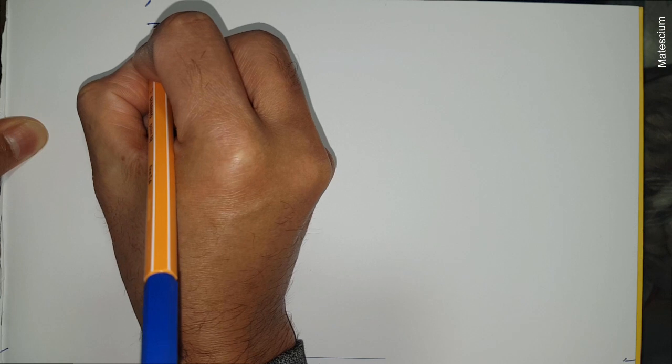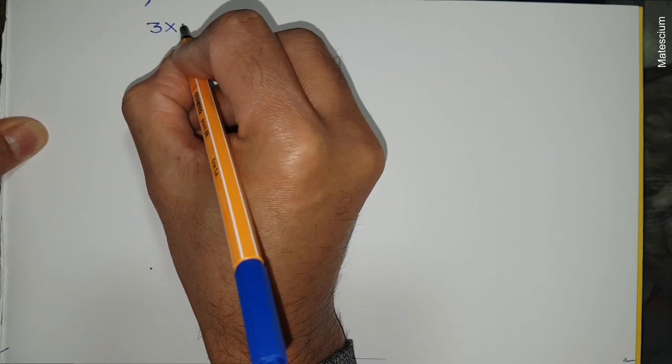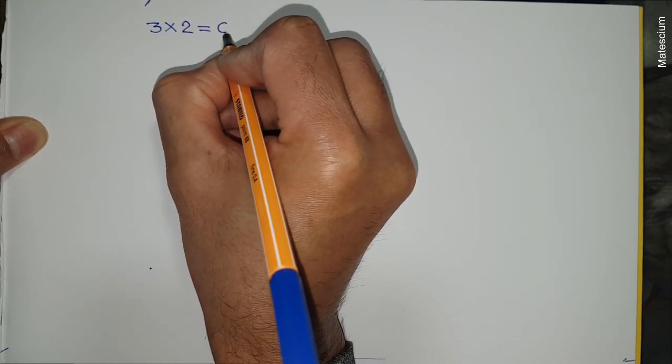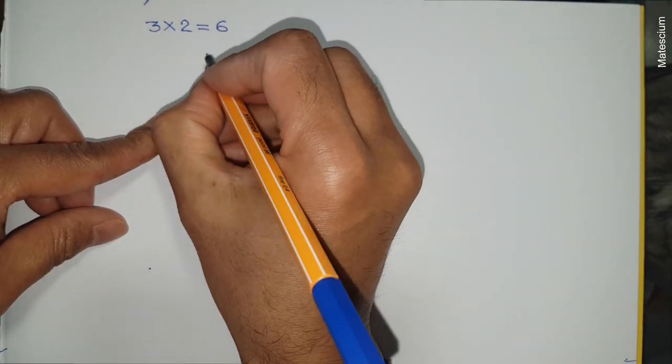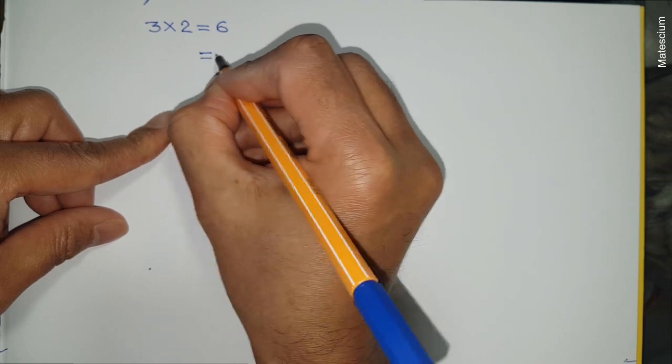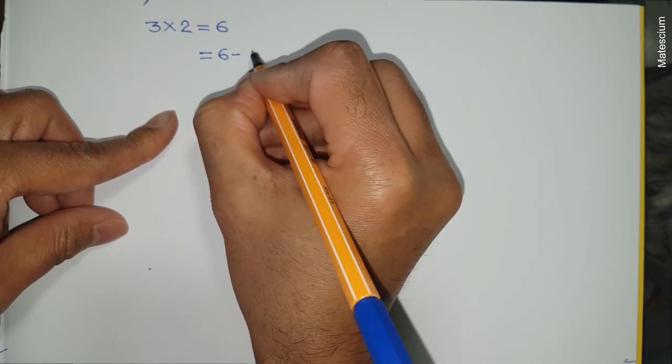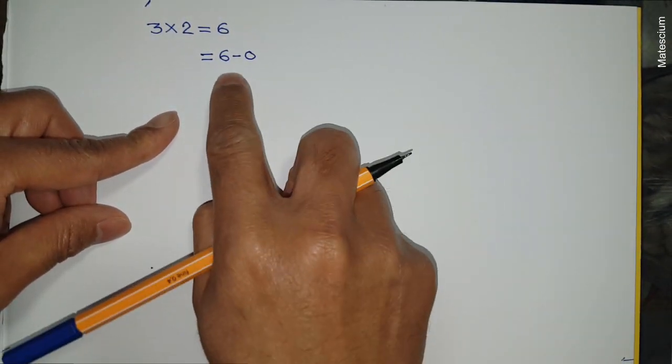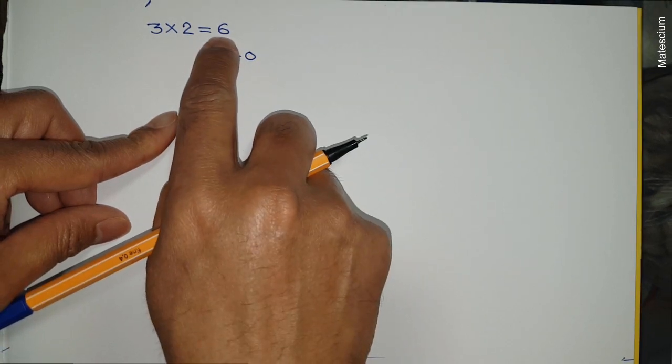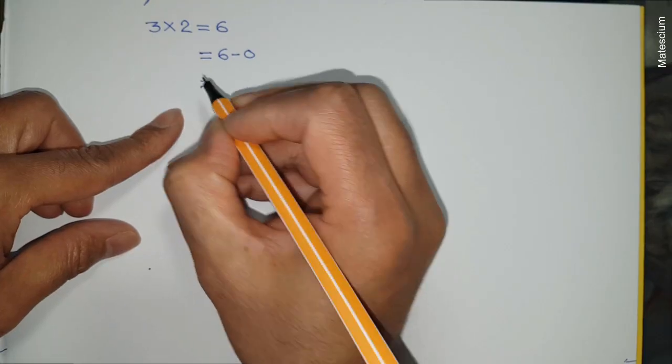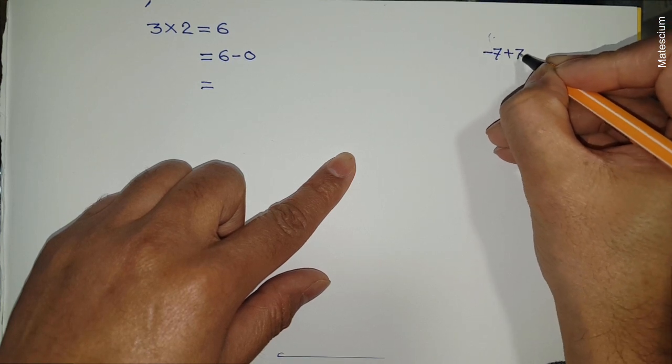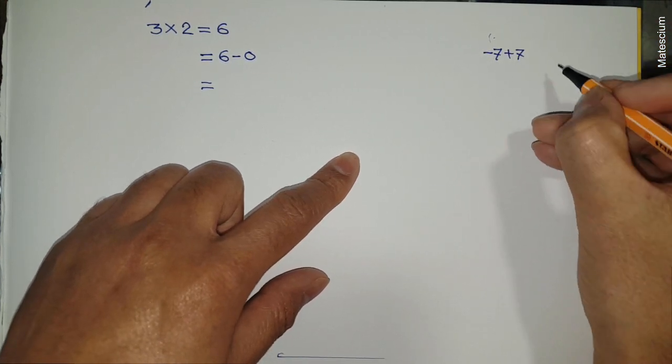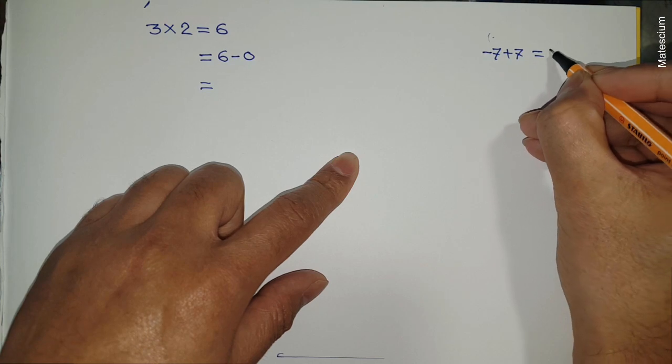Let's start from the beginning. Three times two equals six according to the general rules of mathematics. This six can be rewritten as six minus zero, because anything minus zero remains the same value. Then this zero can be written as minus seven plus seven, because minus seven and plus seven cancel each other, remaining zero.